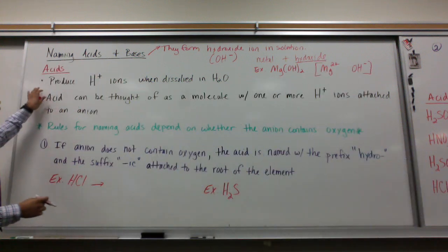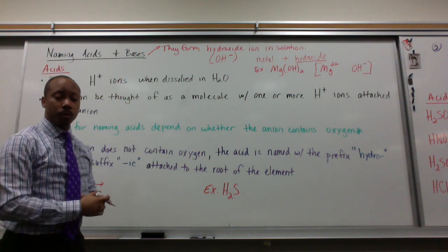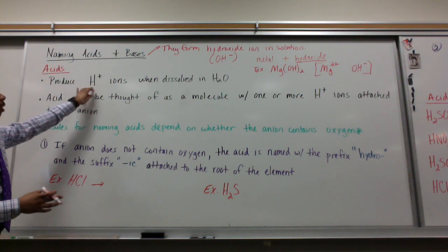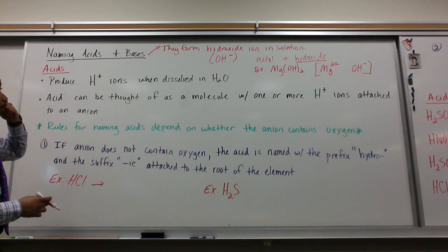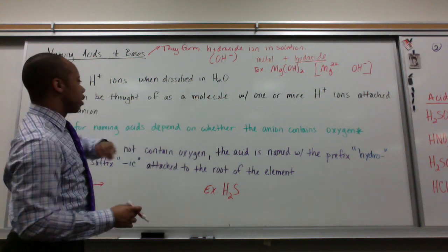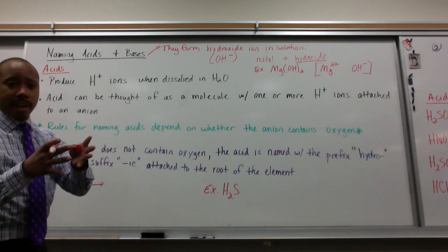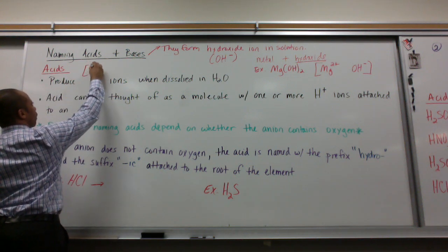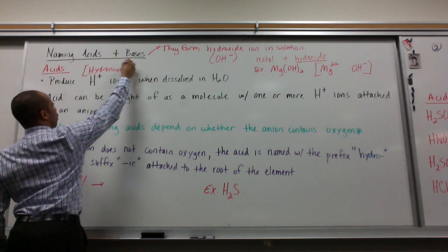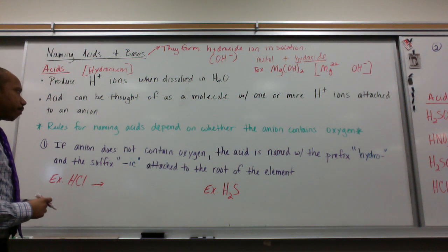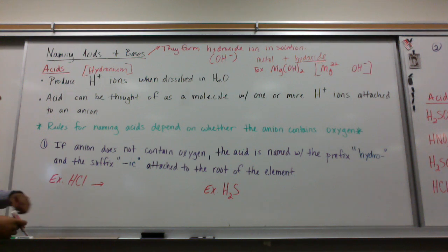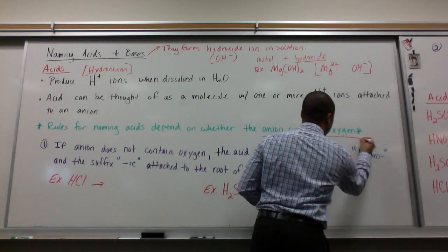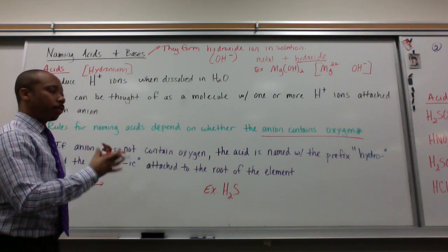Now, acids. Acids are a little more complex. Acids produce H⁺ ions when dissolved in water. Hydrogen has one valence electron and loses that electron in solution when we're talking about acids. Acids can be thought of as molecules with one or more H⁺ ions attached to an anion. Sometimes you might have more than one H⁺. This H⁺ has a specific name — we call it hydronium — but we'll talk about that more later. The rules for naming acids depend on whether the anion contains oxygen, so a lot of it is based on the anion, not the H⁺ itself. The anion will dictate how we name it.